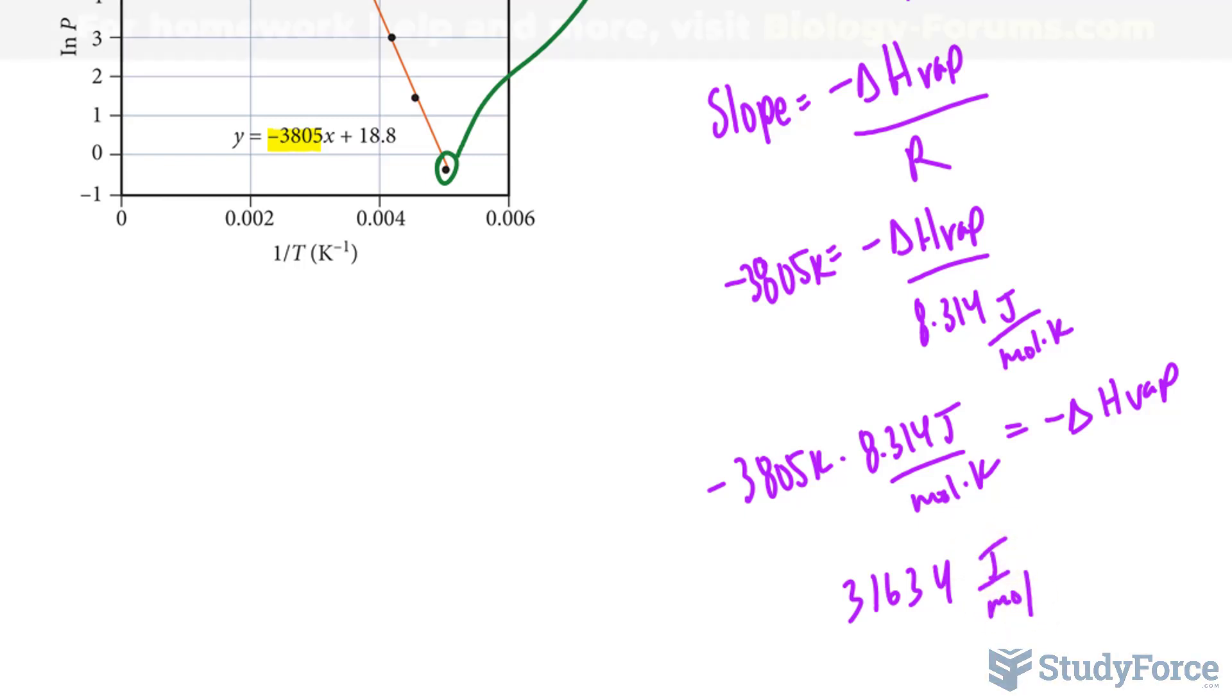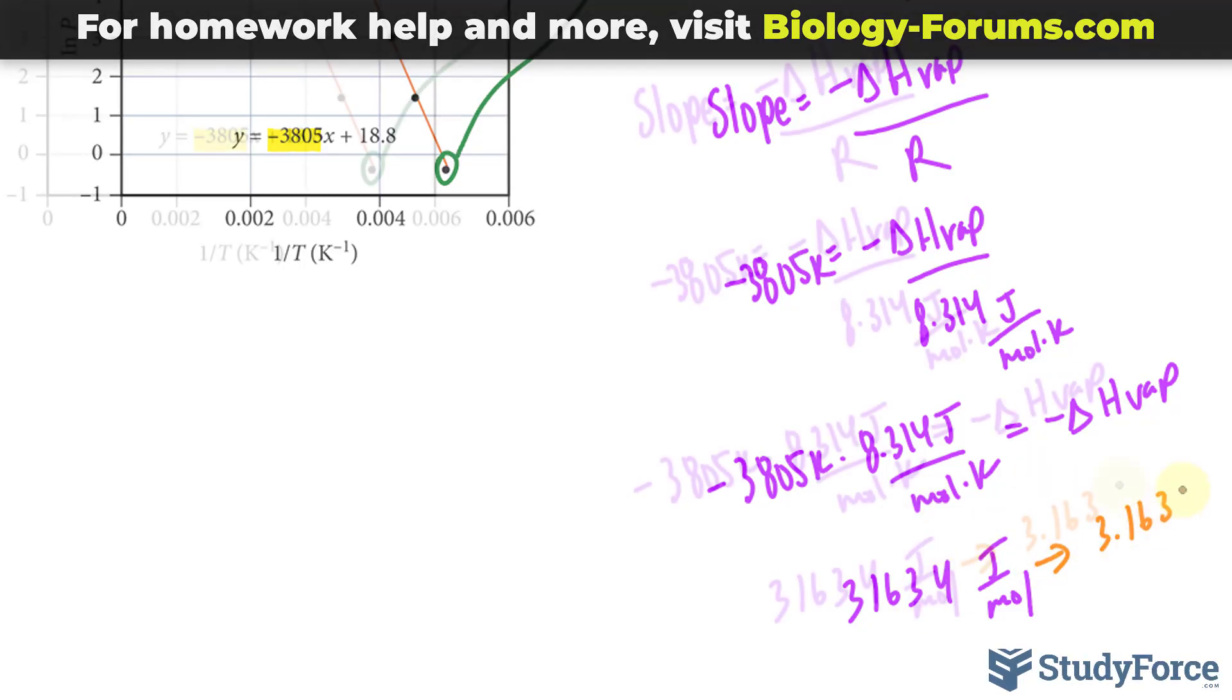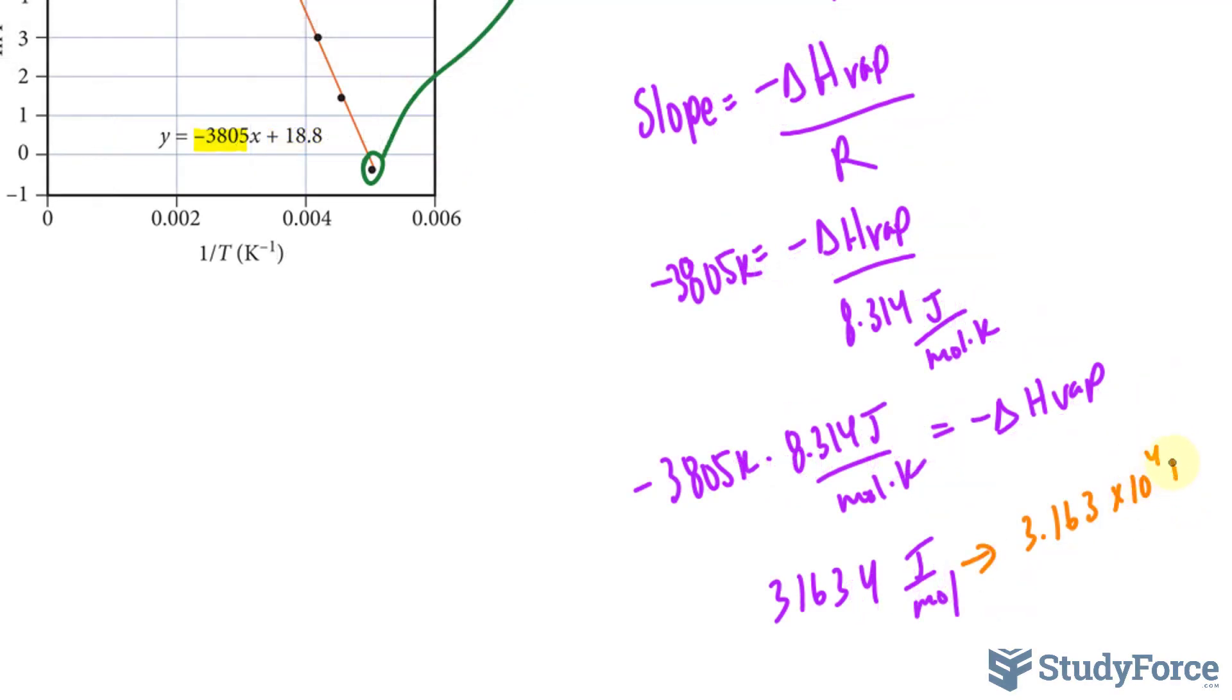Now to maintain the correct number of significant figures, we can stop at 4 significant figures and write this down as 3.163 times 10 to the power of 4 joules per mole. Also you can convert this into kilojoules per mole if you want to represent this smaller. That right there is the heat of vaporization for this molecule.